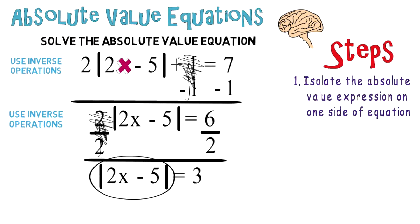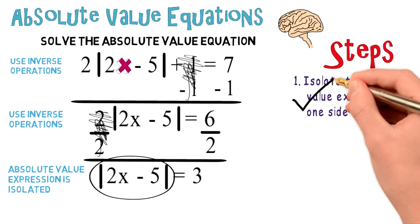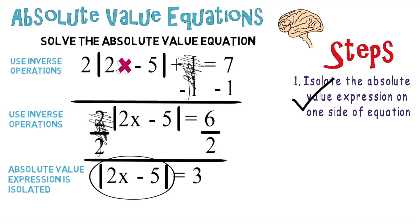Notice the absolute value expression is isolated. So you can check off step one and move on to step two. If the expression equals a negative number, then it's a no solution.